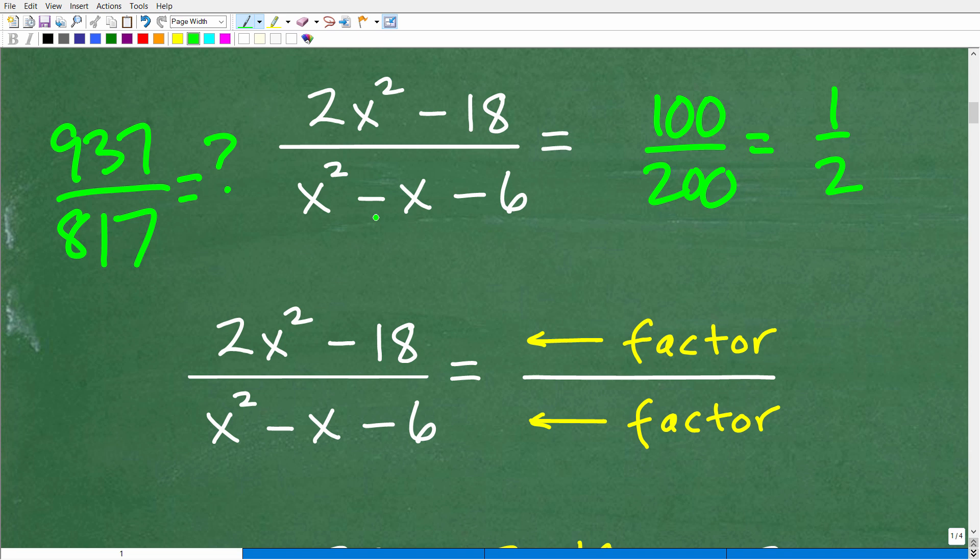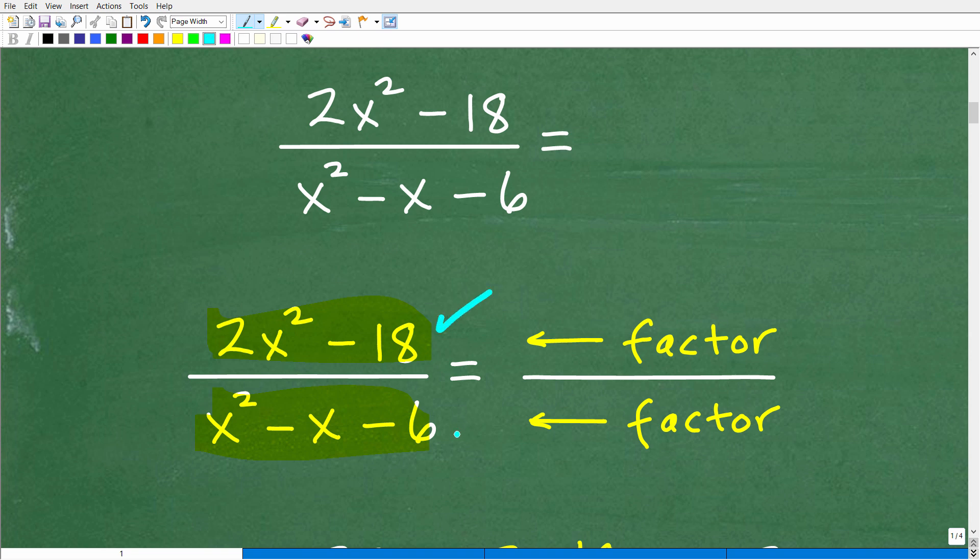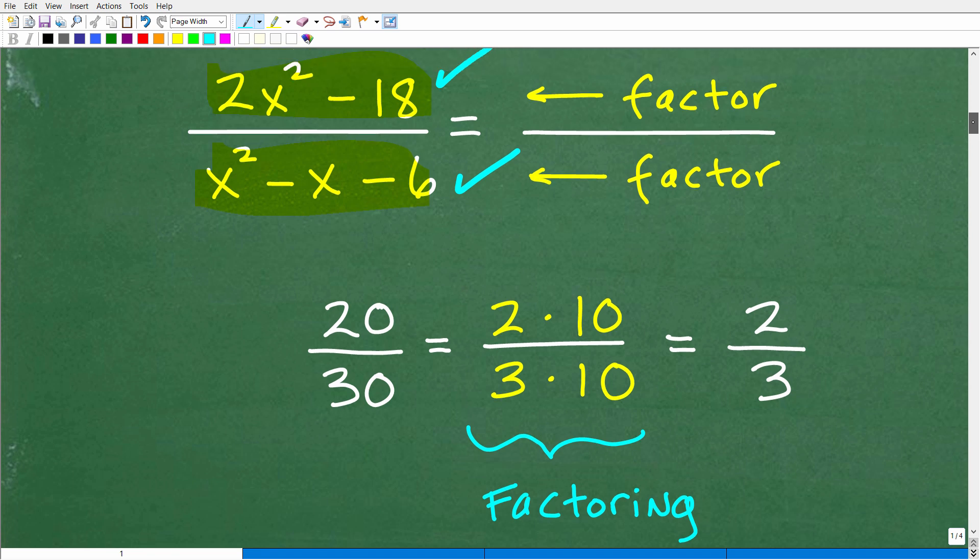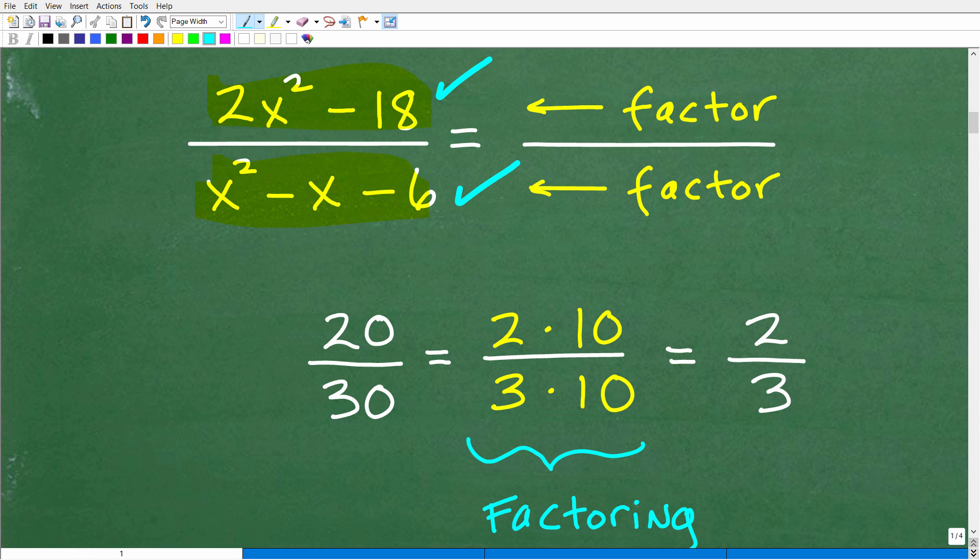What we need to do to attempt to simplify any fraction or rational expression is we need to factor. That is the main skill here. Looking at this problem, you have to say to yourself: can I factor 2x squared minus 18? And can I factor x squared minus x minus 6? Let me just state something right off the bat: this video will not cover all the techniques that you need to know in order to factor completely in algebra. That is a huge topic in and of itself. Nevertheless, we need to know how to factor the numerator and denominator, or at least attempt to factor, because sometimes you cannot factor.